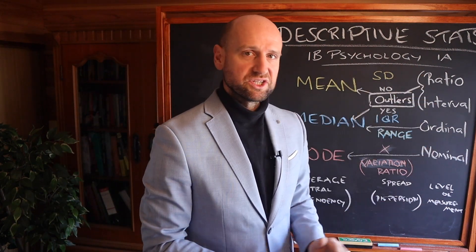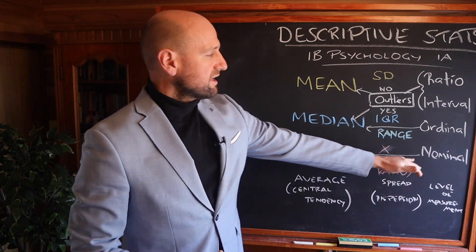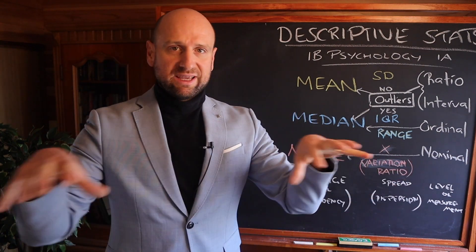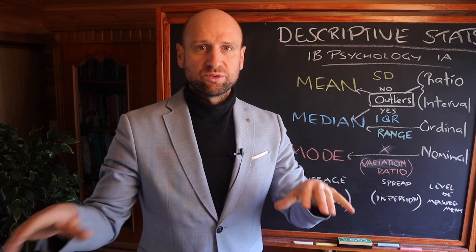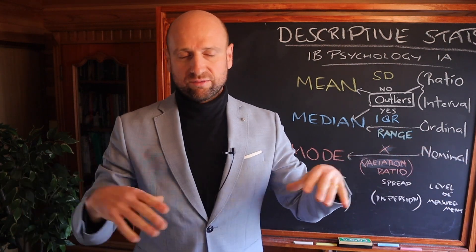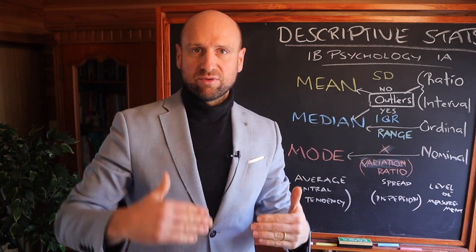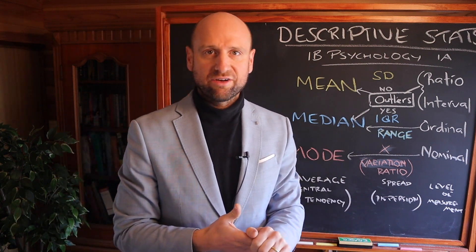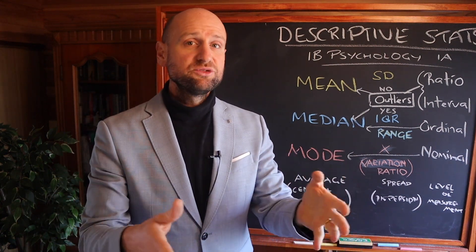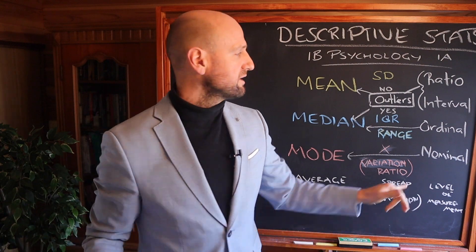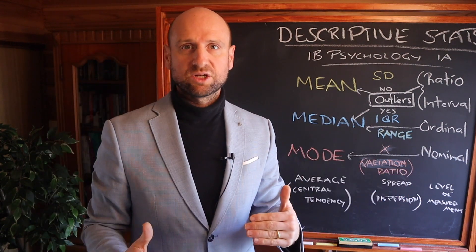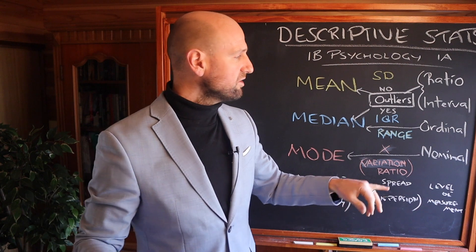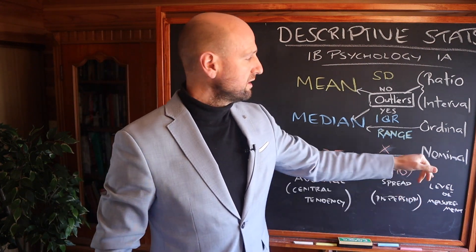Now, what do these levels of measurement mean? Nominal data means your data can be categorized into different groups — yes or no, what's your favorite color: green, yellow, red — we can't rank it from highest to lowest. A good example is Loftus and Palmer's car crash experiment with the broken glass: did you see broken glass? Yes or no. That's nominal data. I can't rank that top to bottom, I can just put it into two categories. So if we can categorize it but we can't rank it, it's nominal.